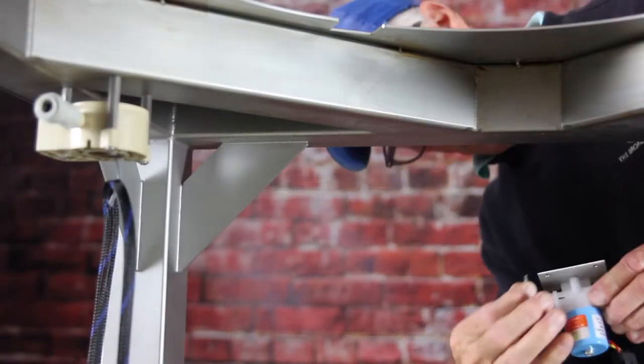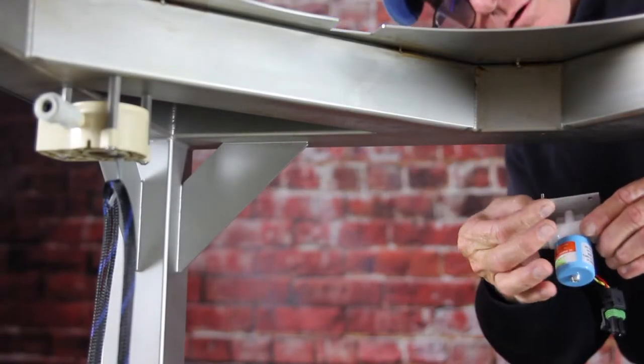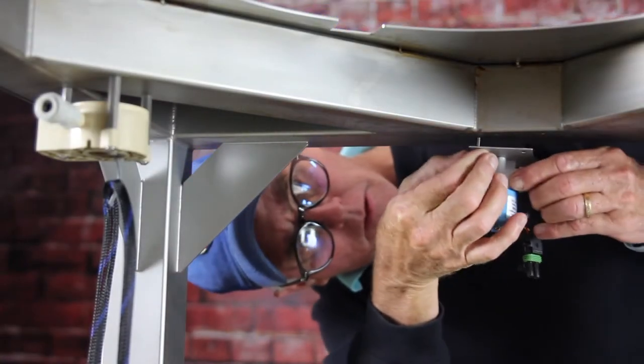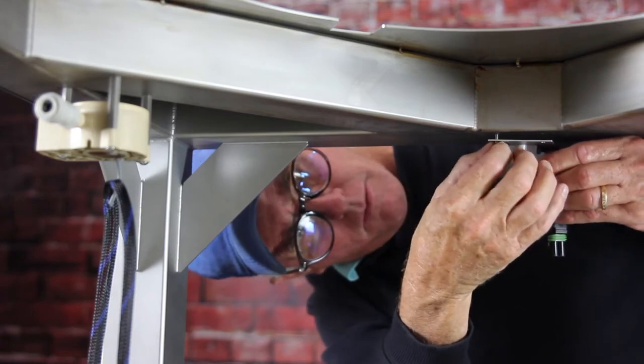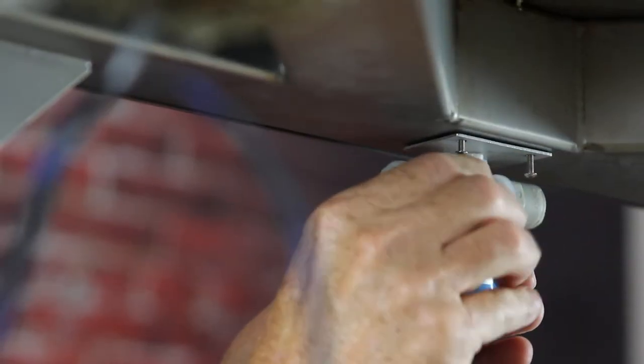Next, let's mount the shutoff valve. It is also flow directional. Mount the arrow so that it is pointing toward the flow sensor.